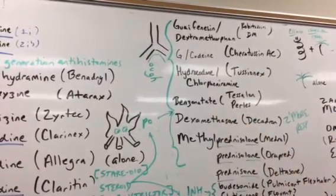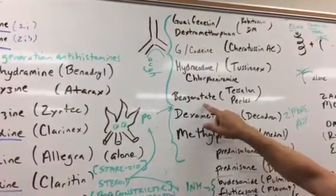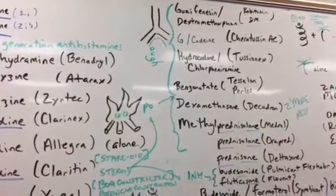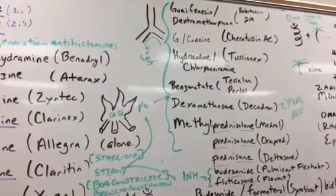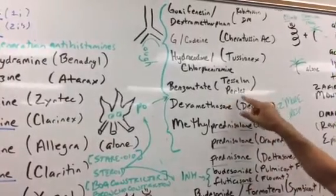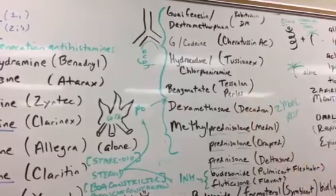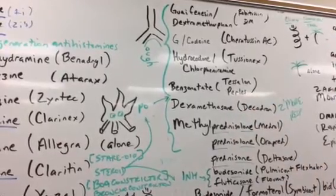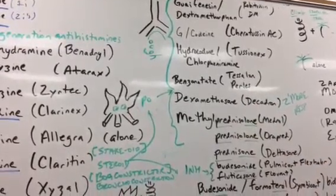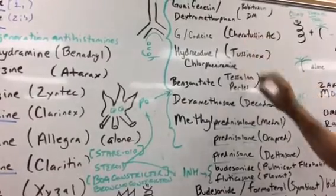Benzonatate. I was a Dungeons & Dragons kid, so those little pearls are little yellow pearls, and they're actually tough to get on the counting tray. But you spell it P-E-R-L-E-S, and the Tessalon Pearls are something that actually kind of numbs the throat to help prevent the cough. So those four are cough.